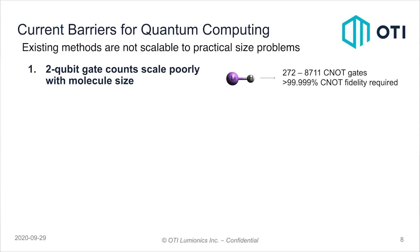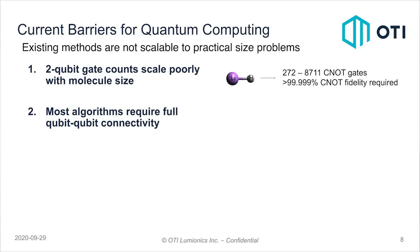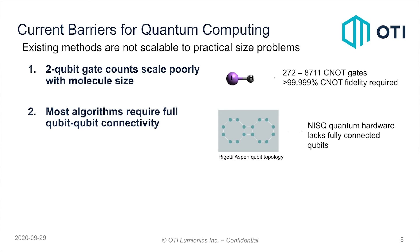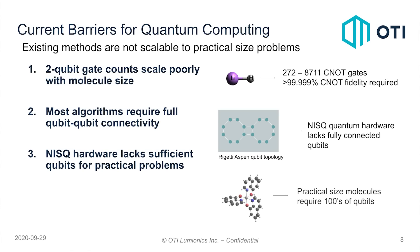One of the problems is that with current quantum algorithms, two-qubit gate counts scale very poorly with molecule size. When you take something like lithium hydride, to get to the accuracy we want, we need something like 272 to 8,711 CNOT gates using unitary coupled cluster ansatze, which requires a CNOT fidelity that has never been reported. Almost all these algorithms require qubit-to-qubit connectivity on a universal quantum computer, and if we take Rigetti's Aspen qubit topology, qubits aren't even remotely fully connected — and this is true for Google's and IBM's quantum computers as well.